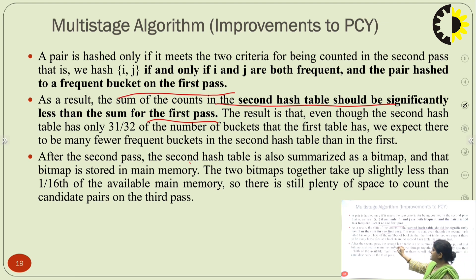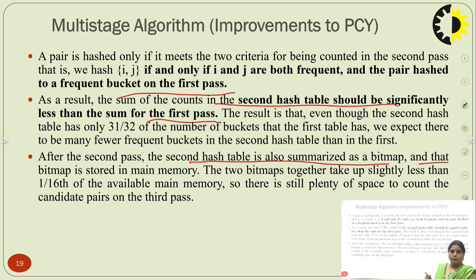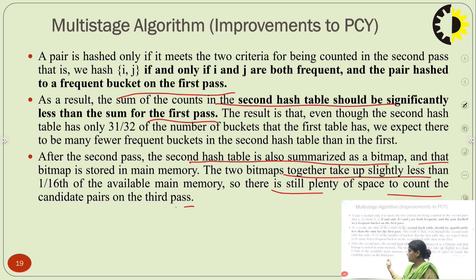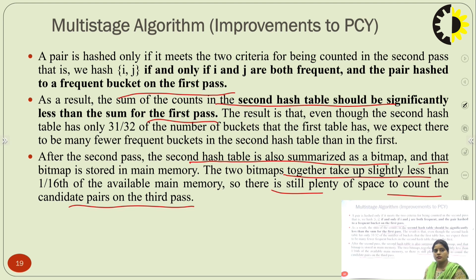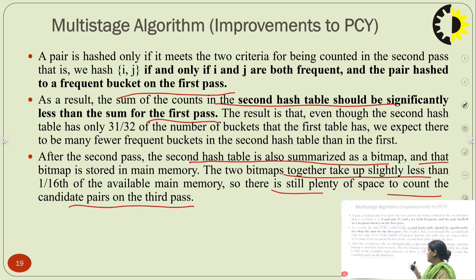After the second pass, the second hash table is also summarized as a bitmap stored in main memory. These two bitmaps together take up slightly less than 1/16 of the available main memory, so there is still plenty of space to count the candidate pairs on the third pass. Even if we use 1/32 of available main memory in PCY, plenty of space remains; similarly in multistage with two hash tables applying different hash functions, there is still plenty of space for the third pass.